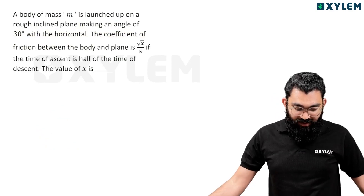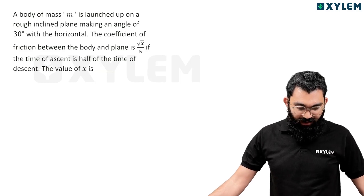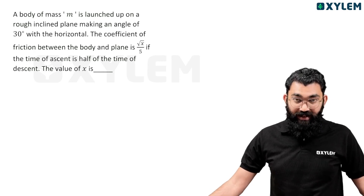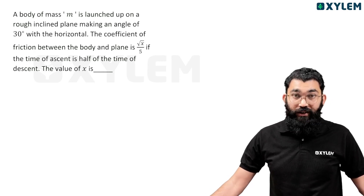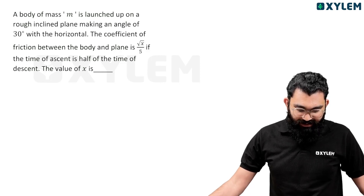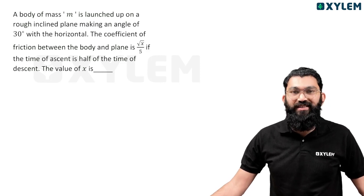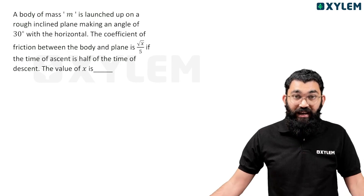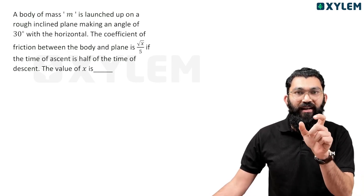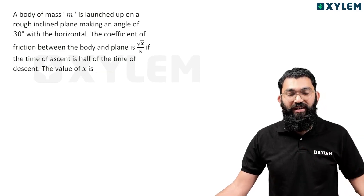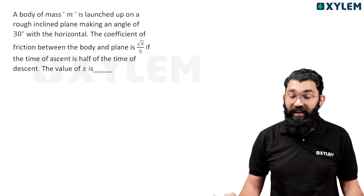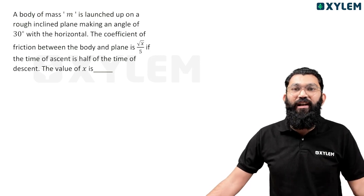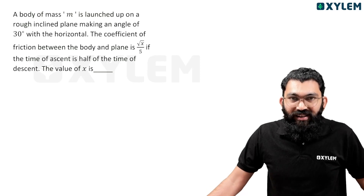Next question: A body of mass m is launched up a rough inclined plane making an angle 30° with the horizontal. The coefficient of friction between the body and the plane is √x divided by 5. If the time of ascent is half of the time of descent along the inclined surface, find the value of x. Using the formula μ equals tan θ times (n² minus 1) divided by (n² plus 1), you can find the value of x. Write your answer in the comment box.